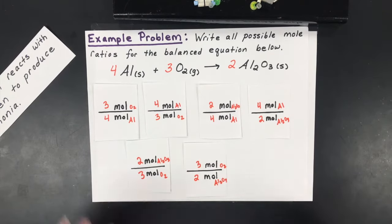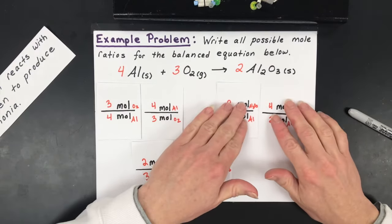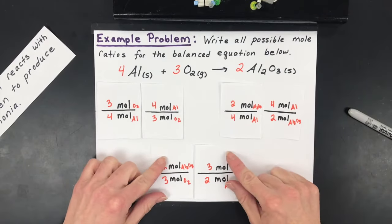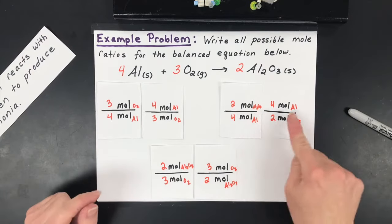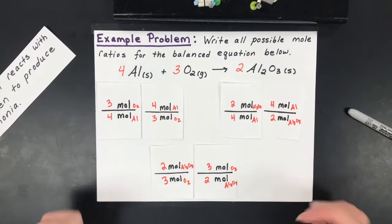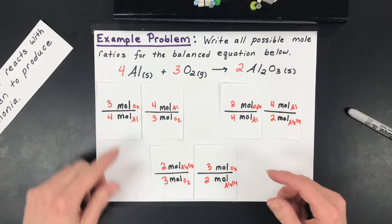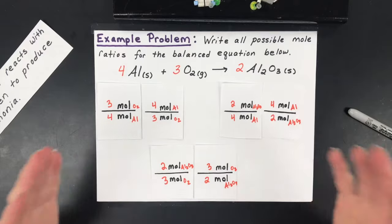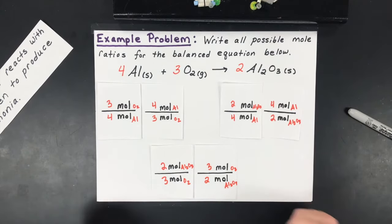So those would be all the mole ratios possible, but really these two are very similar, these two are very similar, and these two, because they're just reciprocals of those same values off of the balanced equation. So again these are coefficients but really they're moles, and the reason why we don't call them molecules and ions and atoms is because we're trying to mass them on a balance and we need a certain weight of them.